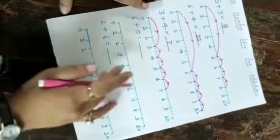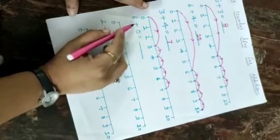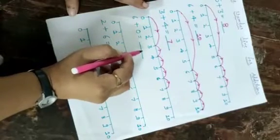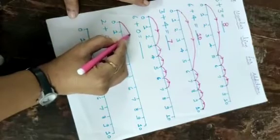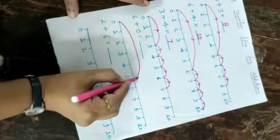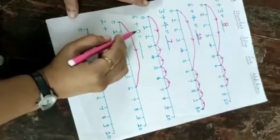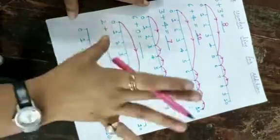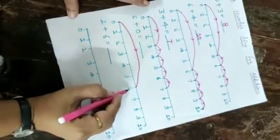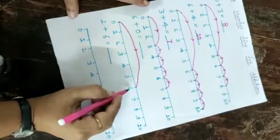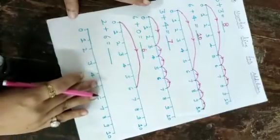Now the next one is 6 plus 0 equal to. The first number is 6, so we take a long jump from 0 to 6. Now the second number is 0 — 0 means nothing. So we stay on number 6 on the number line, and we write here 6.